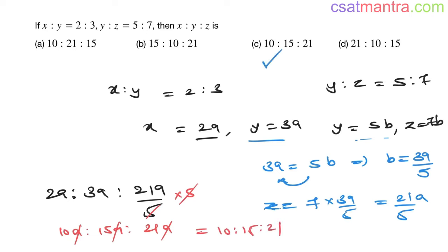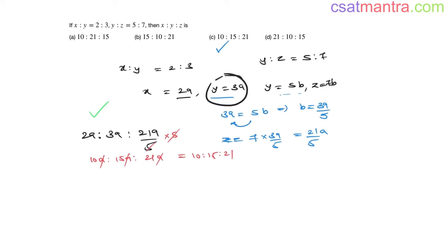See, this conventional method is bit longer. There is a short way also. See, here y is different in both the ratios, right? And you equated them, found out a relation between B and A. What if you can make y equal?